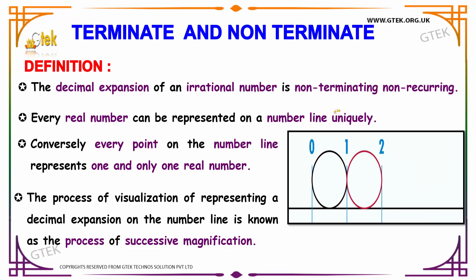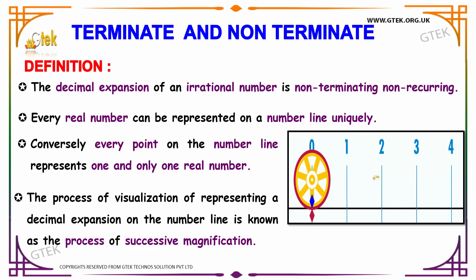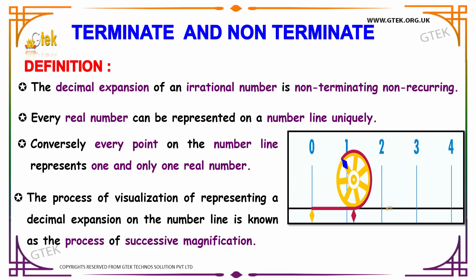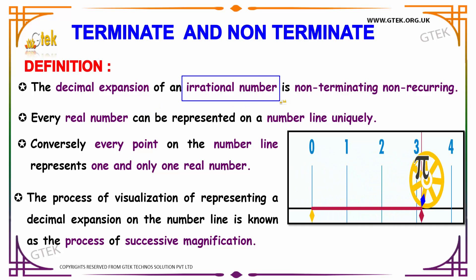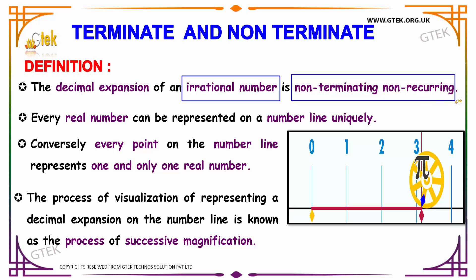Apart from that, the decimal expansion of an irrational number is non-terminating non-recurring. You must keep this in mind because sometimes a rational number is non-terminating recurring. While solving problems based on this logic, you must have these key terms in mind. Also, every real number can be represented on a number line in a unique manner.